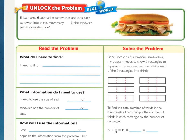Underline what you're being asked to find and circle the important information. You should have underlined how many one-third size sandwich pieces does she have and circled six because that's how many she starts with sandwiches and then thirds because that's the size she cuts them into.